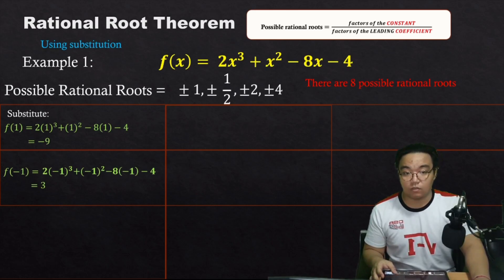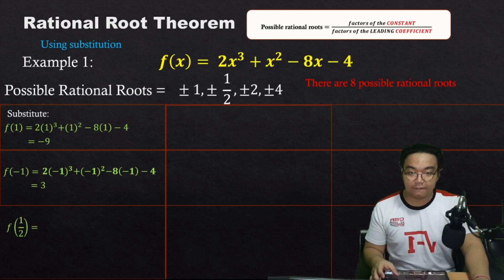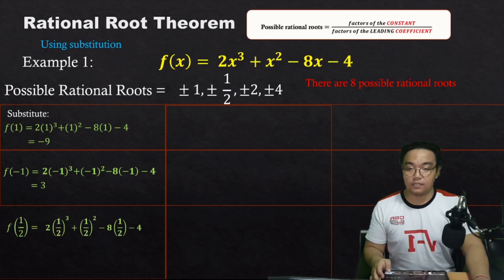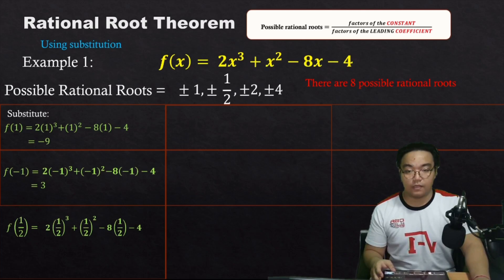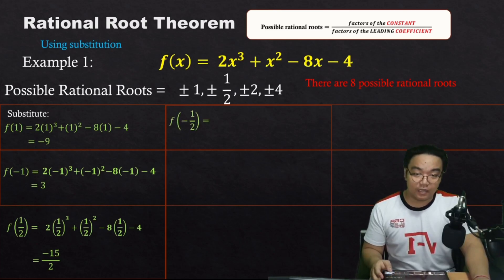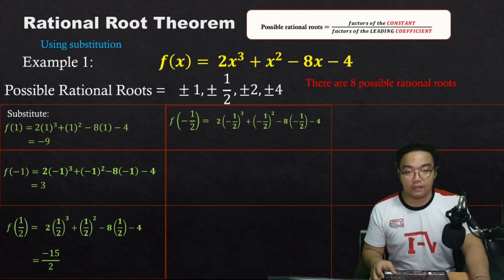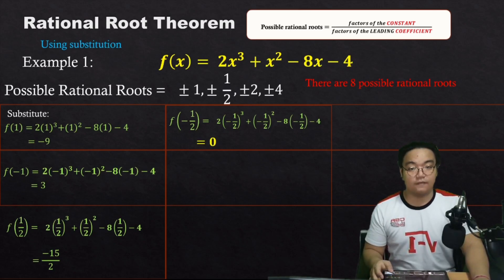Since both f(1) and f(−1) give non-zero remainders, ±1 are not rational roots of this polynomial. Let's try 1/2: substituting gives 2(1/2)³ + (1/2)² − 8(1/2) − 4, which gives negative 15/2. Trying negative 1/2: 2(−1/2)³ + (−1/2)² − 8(−1/2) − 4 simplifies to 0. So negative 1/2 is a root.